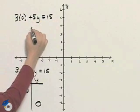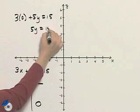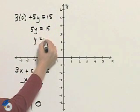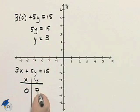3 times 0 is 0, so I end up with 5y equals 15. Dividing both sides by 5 gives us y equals 3. So I can put that in my t-chart now.